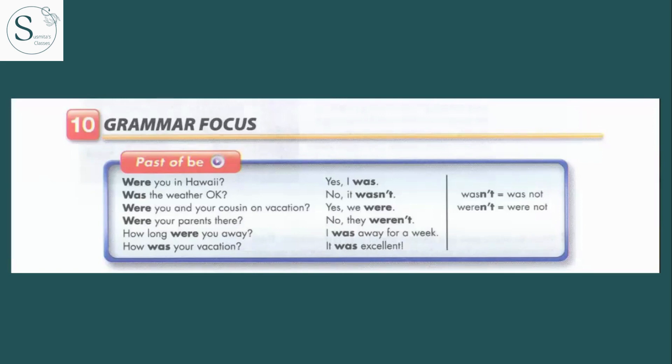And for negative we can use was not or were not. And in short form we use wasn't or weren't. But it's okay to use the full forms as well. Okay, the way we use it in the class itself.